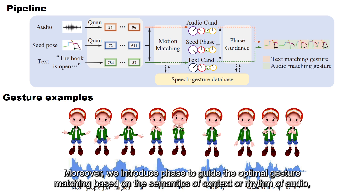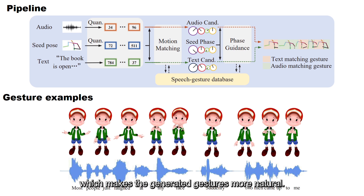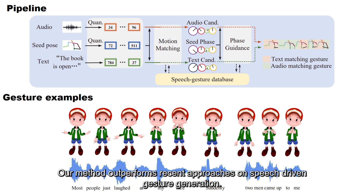Moreover, we introduce phase to guide the optimal gesture matching based on the semantics of context or rhythm of audio, which makes the generated gestures more natural. Our method outperforms recent approaches on speech-driven gesture generation.